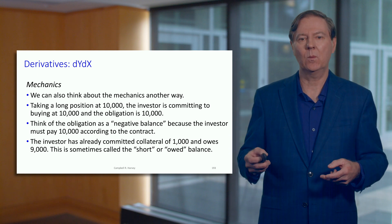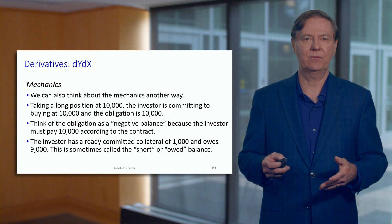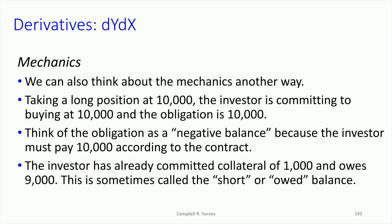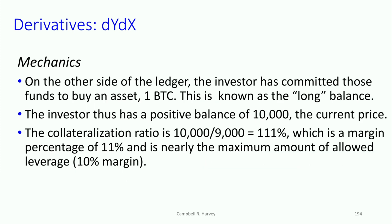Let's think about this differently with some diagrams. This investor is taking a long position at 10,000 — effectively committing to purchase or buy at 10,000. So there's an obligation of 10,000. You can think of this obligation to pay the 10,000 as a negative balance, because according to the contract you've agreed to buy at 10,000. The investor has already committed collateral of 1,000, so what's actually owed is 9,000. This is sometimes called the short or owed balance.